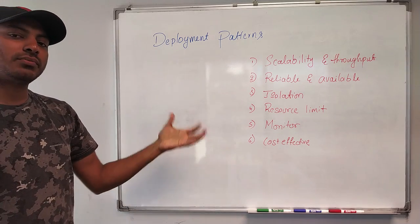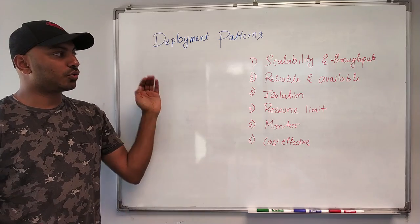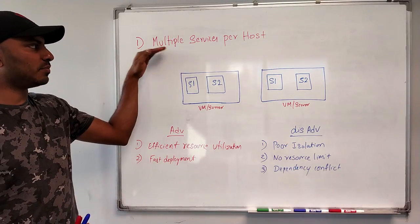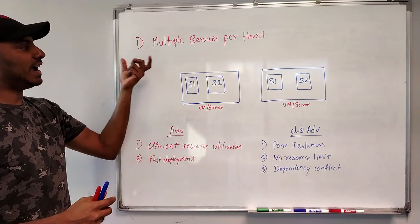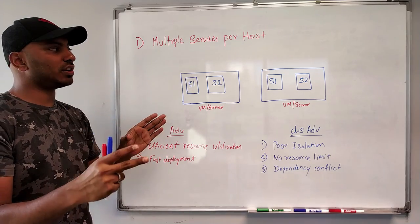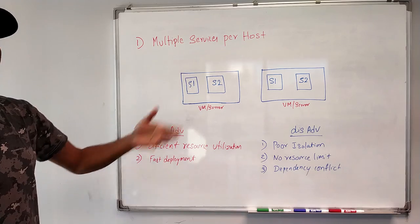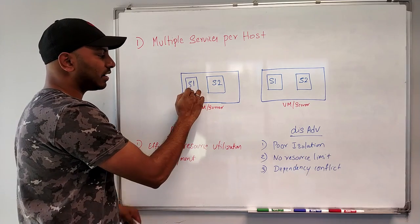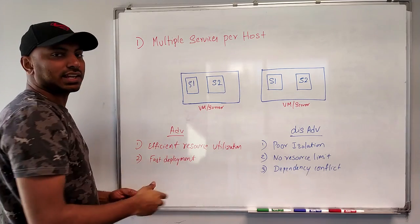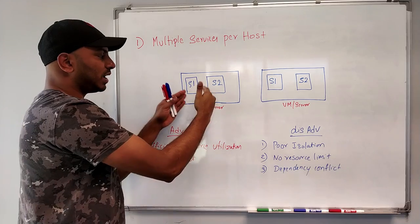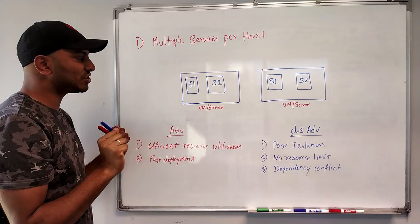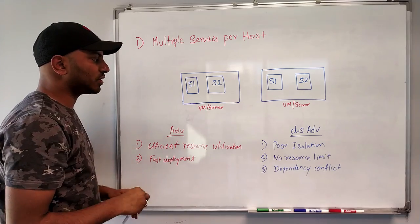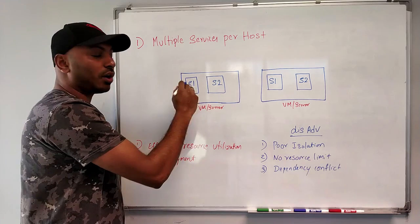Let's see what different patterns are available or used in industry to achieve all of these goals when deploying microservices. The very first deployment pattern is called multiple service per host. As the name suggests, it is running multiple services in a single virtual machine or physical server. As shown, this is one virtual machine or physical server in which we are running microservice one and microservice two. You can run more than one — it could be 10 or 15 microservices. Usually these services run as separate processes of the same operating system.